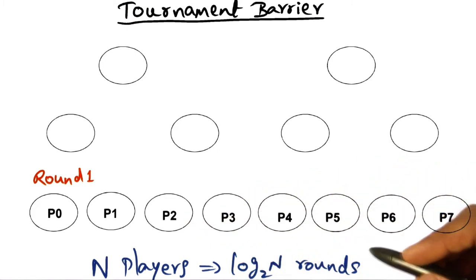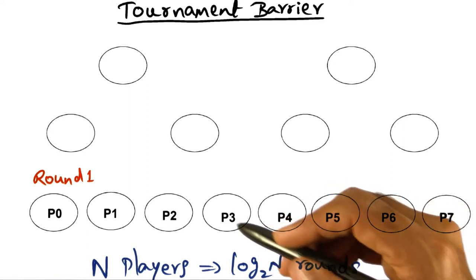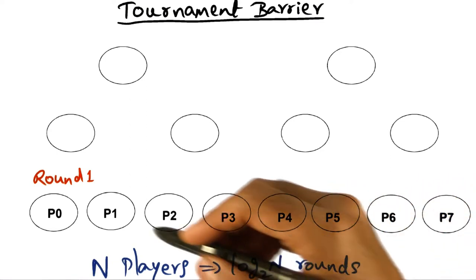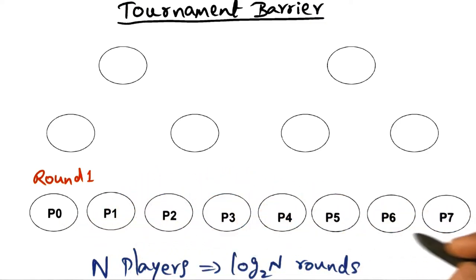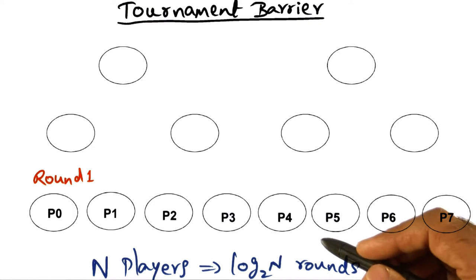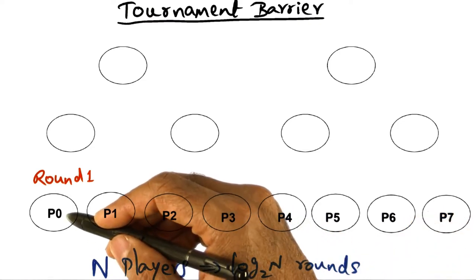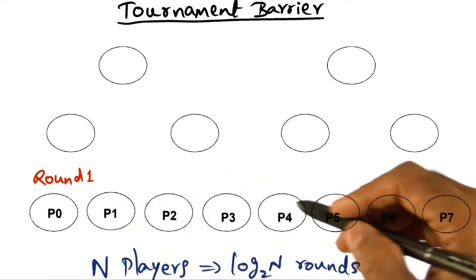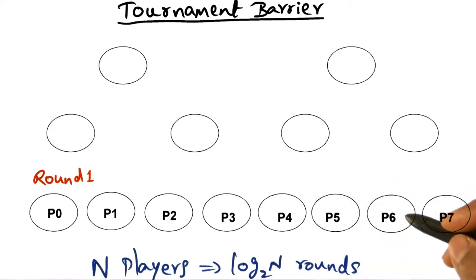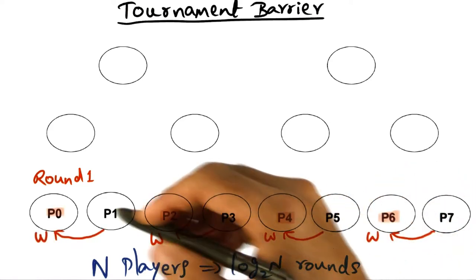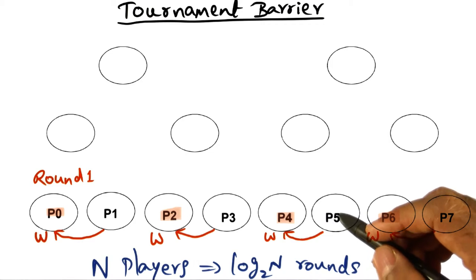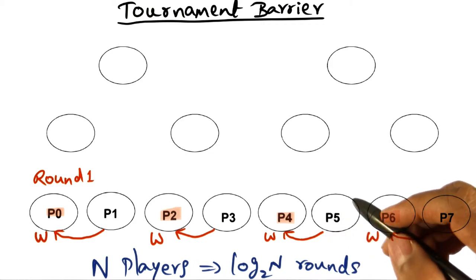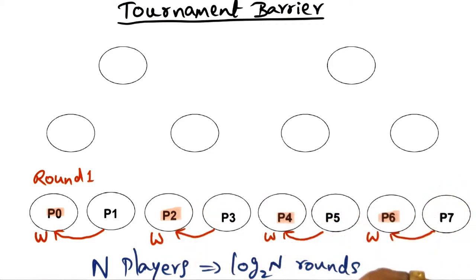And the only catch is that we're going to rig this tournament. In other words, we're going to predetermine who is going to be the winner in this round. Particularly, P0 is the winner for this match, P2 for this one, P4 for this one, and P6 for this one. So the matches are rigged. In this day and age when we hear about international scandals about match fixing, I guess this is not too far-fetched. But what is the rationale for match fixing?